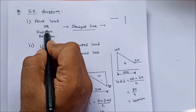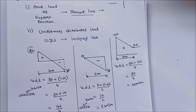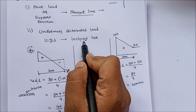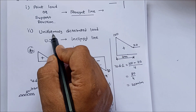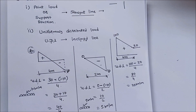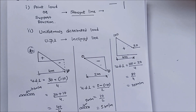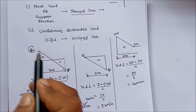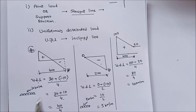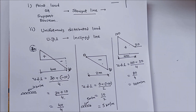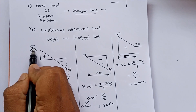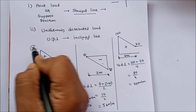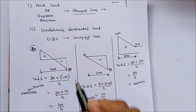Point one: sudden changes indicate a point load or support reaction. Point two: if there is an inclined line in the shear force diagram, there is always a uniformly distributed load (UDL). To calculate UDL, simply remember that UDL equals left side force minus right side force divided by length. For example, left side force is 30 kN and right side force is 10 kN.